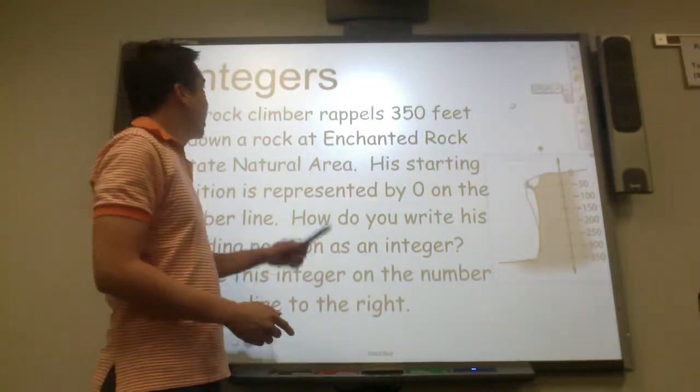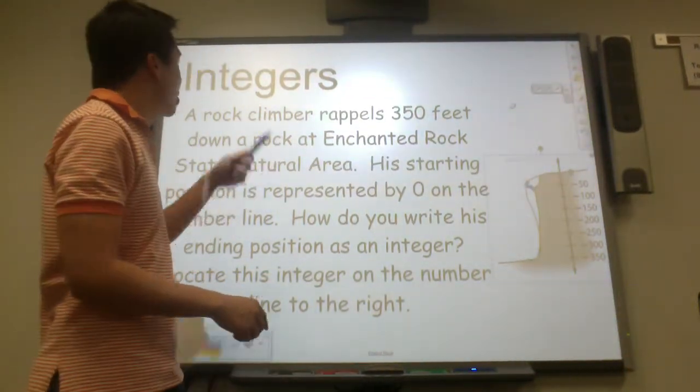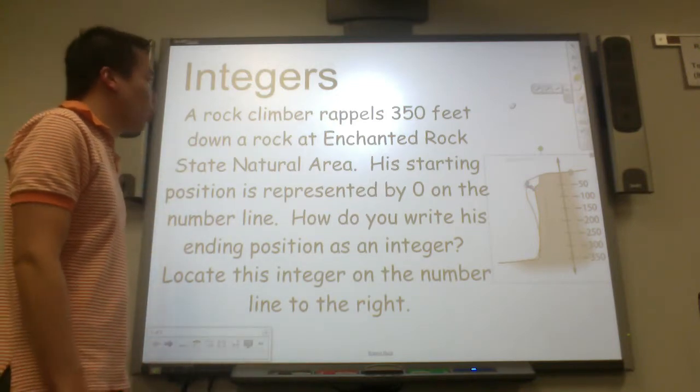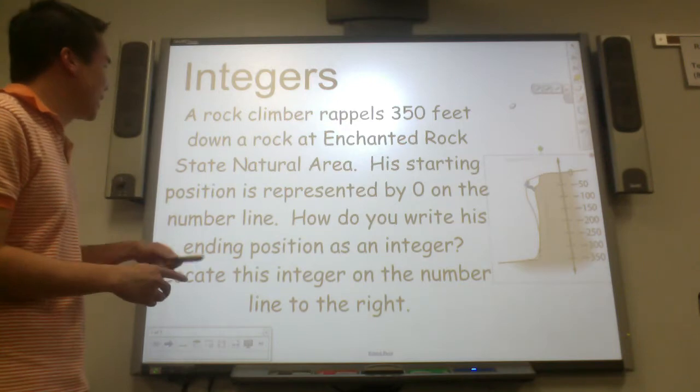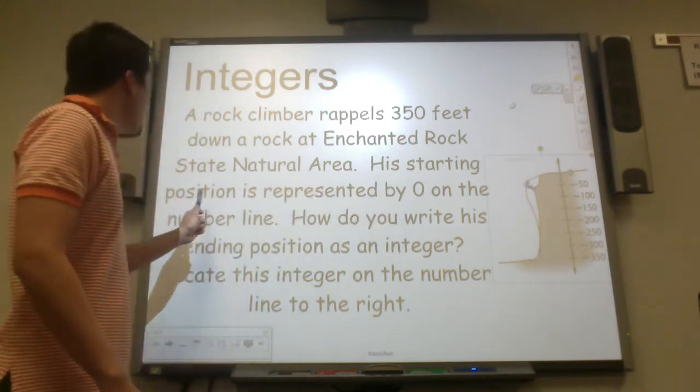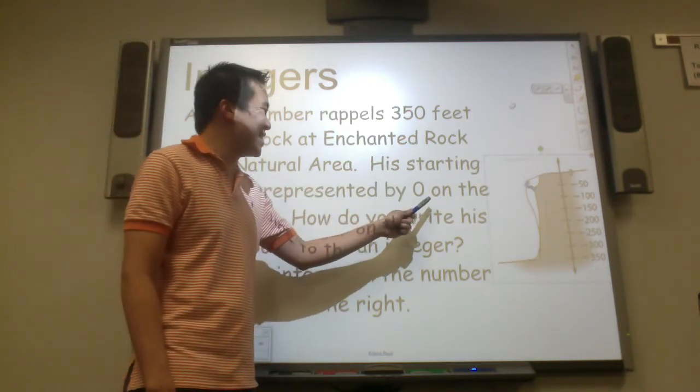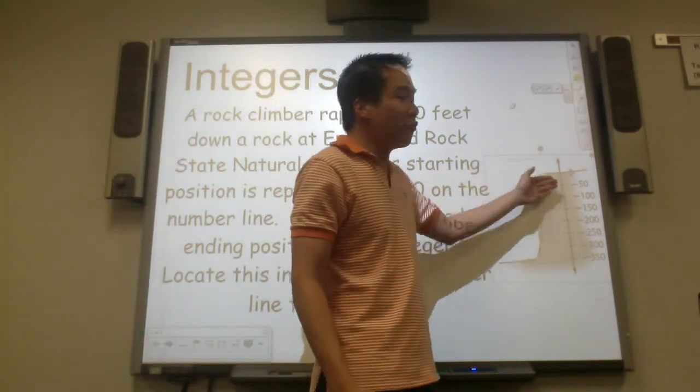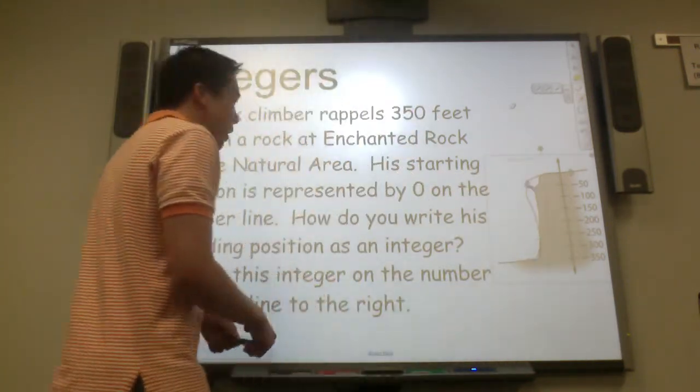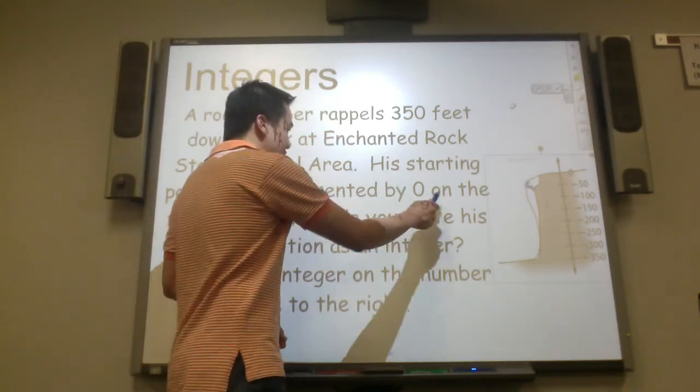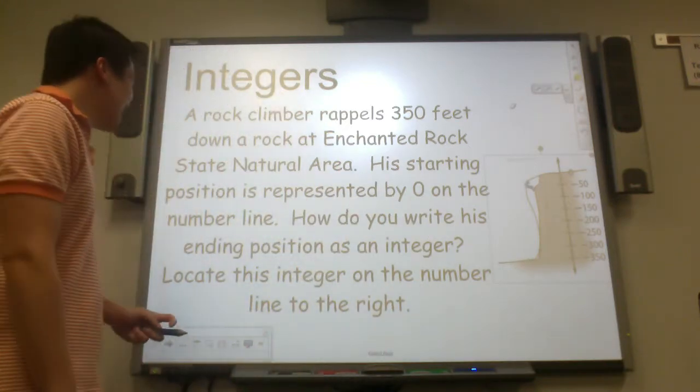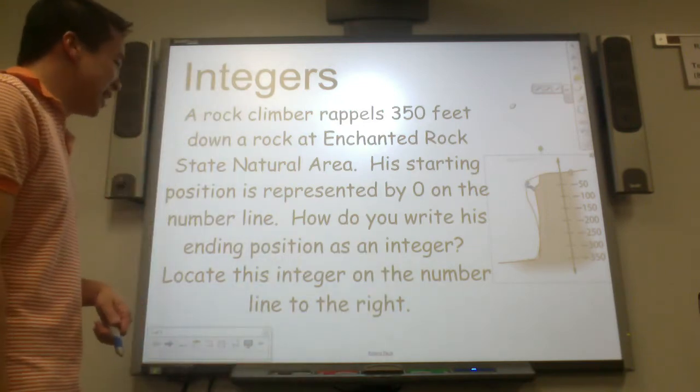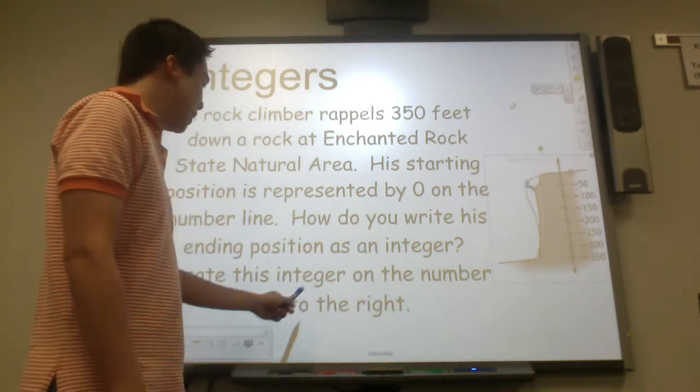Today our topic of study is integers. A rock climber repels 300 feet down a rock at Enchanted Rock State Natural Area. His starting position is represented by zero on the number line. This is a vertical number line. It can also be represented horizontally. How do you write his ending position as an integer? Locate this integer on the number line to the right.